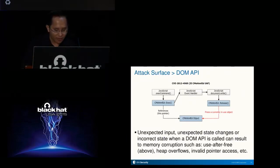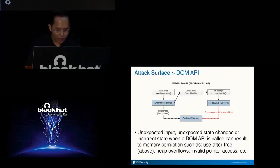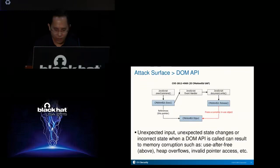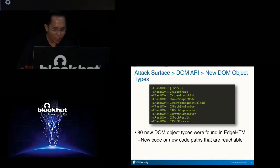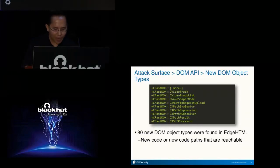An example is the use-after-free illustrated on the screen. In this particular case, a CMSHTMLed object was unexpectedly freed when document.write was called, resulting in a use-after-free condition. Using the diffing method described in the overview, 18 new DOM object types were found. These new DOM object types represent new code or code paths that are reachable to an attacker via the DOM API.